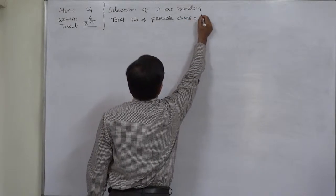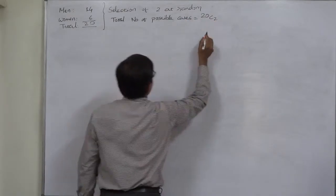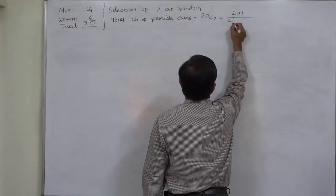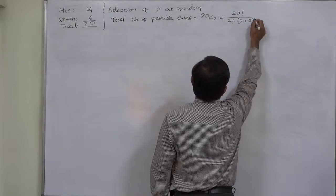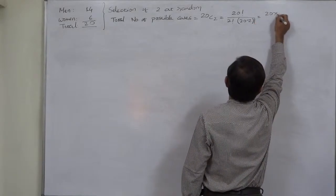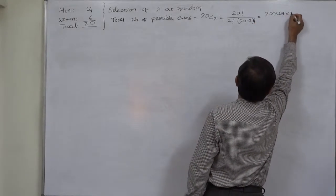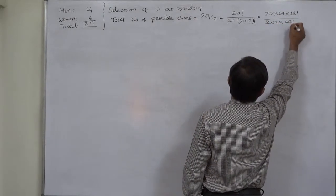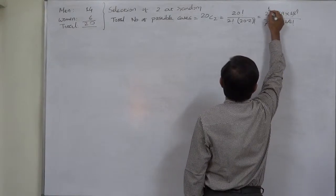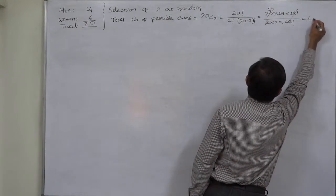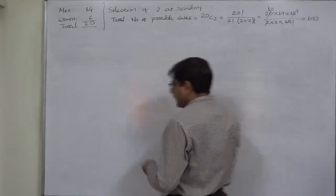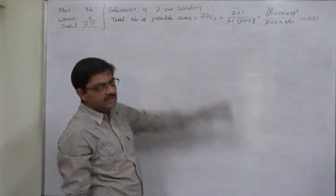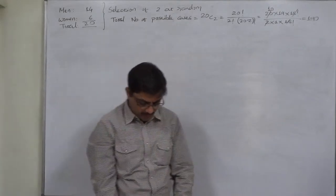And that will be 20C2, and 20C2 is 20 factorial divided by 2 factorial into 20 minus 2 factorial. That is 20 into 19 into 18 factorial upon 2 into 1 into 18 factorial. So it comes to 190. That means there are 190 mutually exclusive ways of selecting two persons out of a list of 20.